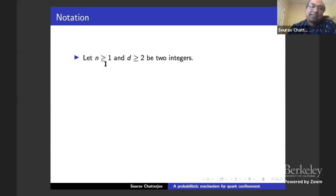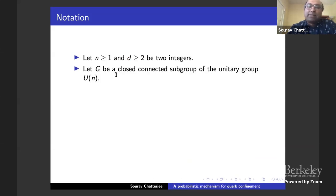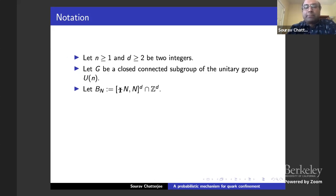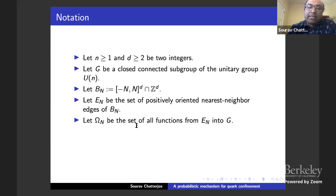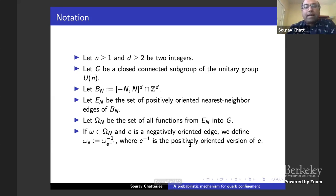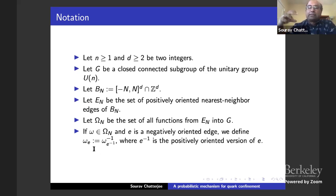Here's the notation. Let N and D be two integers, and let G be a closed connected subgroup of the unitary group U(N). Let B_N be a large box in Z^D, and let E_N be the set of positively oriented nearest-neighbor edges of B_N. Let Omega be the set of all functions from E_N into G — you're attaching a group element to each positively oriented edge. For a negatively oriented edge, the matrix attached to it is defined to be the inverse of the matrix attached to the positively oriented edge.